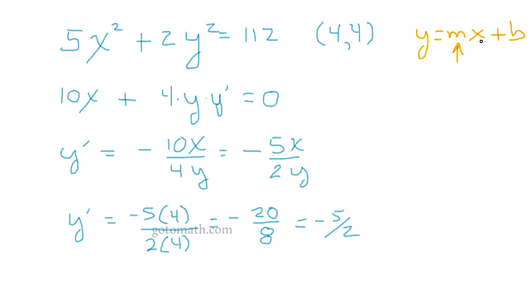So now we have the slope and all we need is y = -5/2 x + b. All we need to do now is solve for b. So we plug 4 in for x and 4 in for y. Obviously they're both 4.